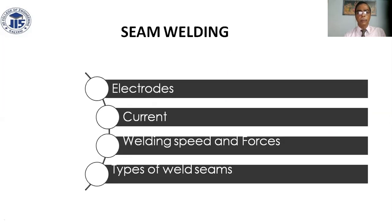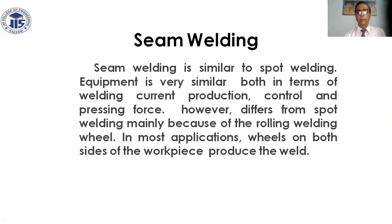Seam welding: seam welding speed and forces depend on the type of weld. Seam welding is similar to spot welding in terms of current, production control, and pressing force. The difference from spot welding is mainly due to the rolling welding wheel. In most applications, wheels on both sides of the workpiece produce the weld.